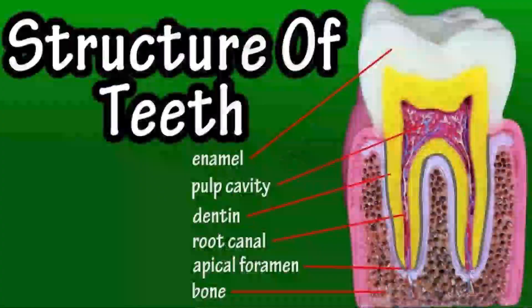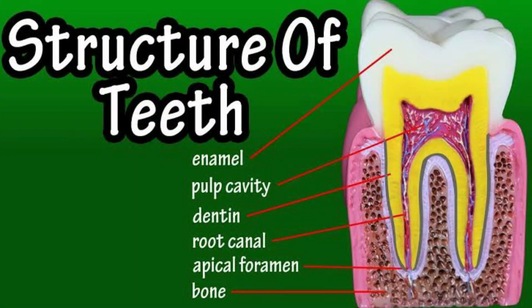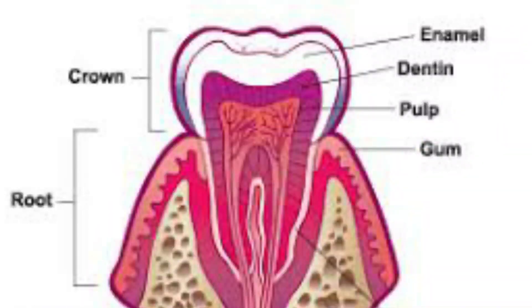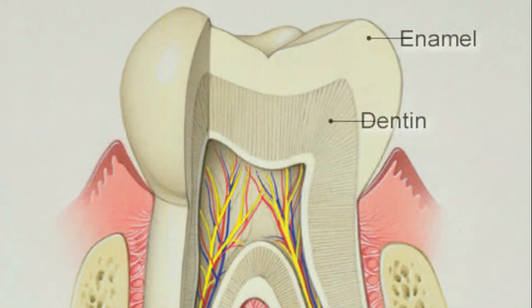Today's lesson we are going to do science, and under science we are going to cover the teeth. First we deal with the structure of a tooth. A tooth structure is divided into two parts: we have the crown and we have the roots. The crown has its own parts — for example, we have the enamel and the dentine under the crown.